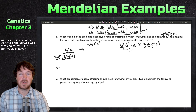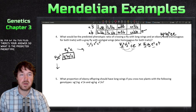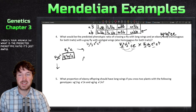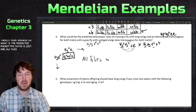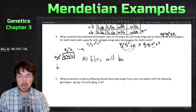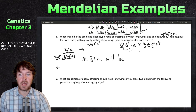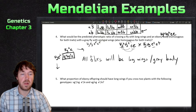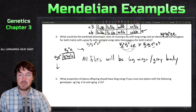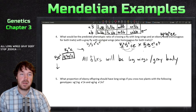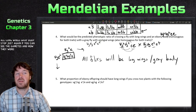The final answer for all offspring will be 'vg-plus/vg' and 'e-plus/e'. So the predicted phenotypic ratio is just one — all flies will have long wings and gray body. Seeing how the gametes write out can help you get to your answer quickly.